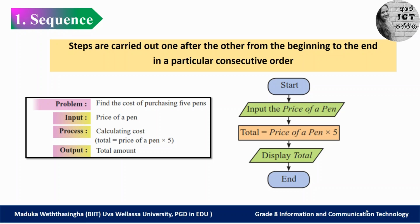The process is to calculate the price of five pens — the total amount needed to purchase five pens. It's very easy: we know the cost of one pen, so we multiply that value by five. Total = price of a pen multiplied by five. The output is the total amount needed to purchase the pens.